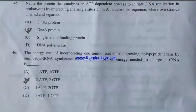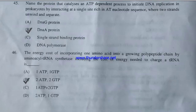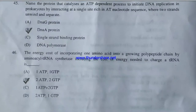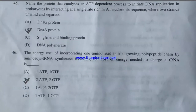Question 45: Name the protein that catalyzes an ATP-dependent process to initiate DNA replication in prokaryotes by interacting at a single site rich in A-T nucleotide sequences, where two strands unwind and separate. Options: DnaG protein, DnaA protein, single-strand binding protein, or DNA polymerase. The answer is DnaA protein. The energy cost of incorporating one amino acid into a growing polypeptide chain by aminoacyl-tRNA synthetase, including the cost to charge a tRNA, is: one ATP + one GTP, two ATP + two GTP, one ATP + two GTP, or two ATP + one GTP? The correct answer is B — two ATP and two GTP.